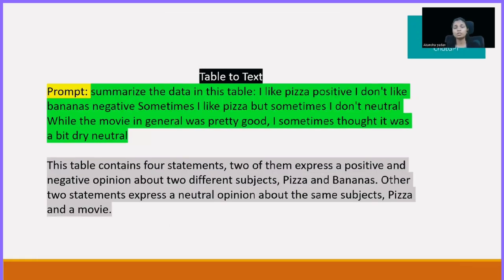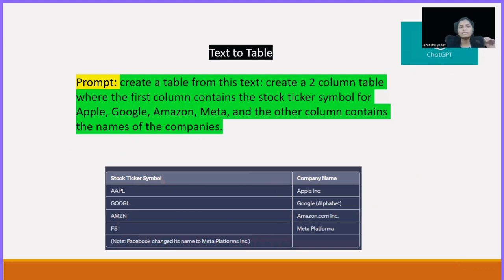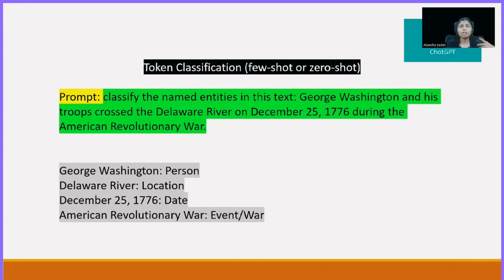You can also convert text into a table. Say 'create a table from this text' and pass on the text you have — for example, summarizing sentiment statements about pizza and bananas. ChatGPT can generate a table which you can copy directly, take a screenshot, or do whatever you want with it.